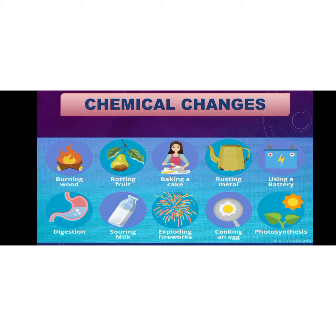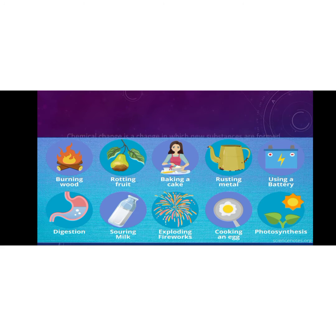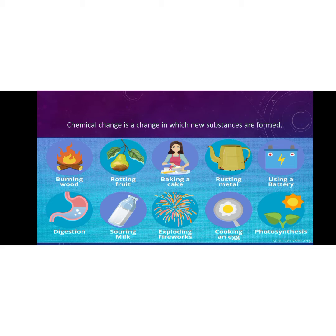Now, what do you mean by chemical change? A chemical change is a change in which new substances are formed. Here are some examples of chemical changes: burning wood, rotting fruit, baking a cake, rusting metal, using a battery, and many more.